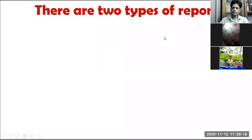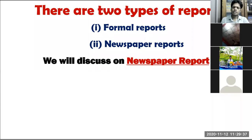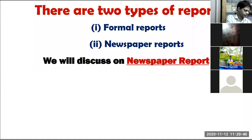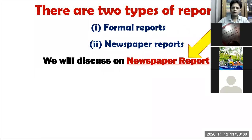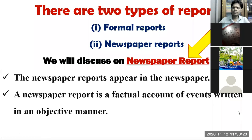There are two types of report. How many types? Two types of report. The first one is a formal report, and the second one is a newspaper report. So today we will discuss on newspaper report — how to write a newspaper report. The newspaper reports appear in the newspaper; that means a newspaper is the sum total of reports.